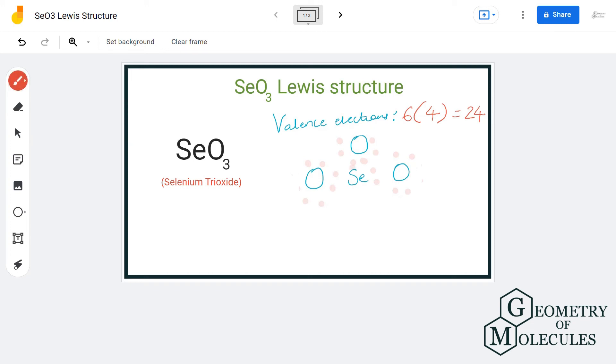This is the Lewis structure of SeO3 in which the selenium atom forms double bonds with three oxygen atoms. I hope this video helps you to understand that.